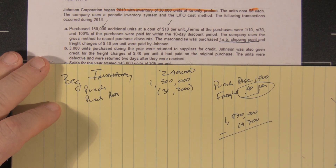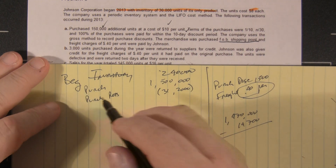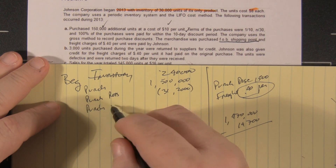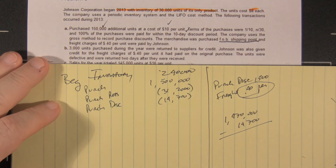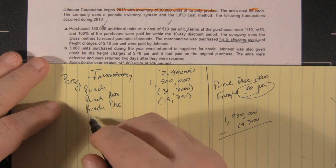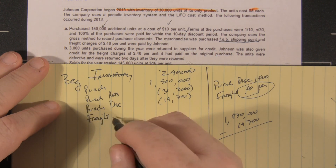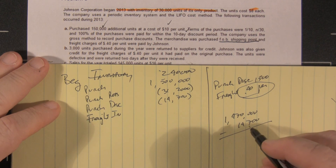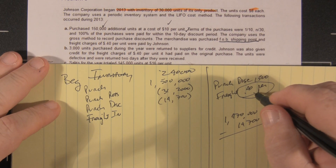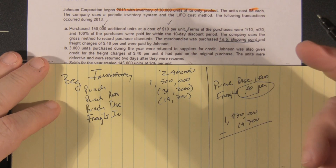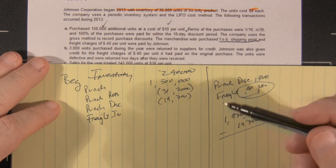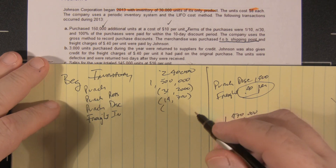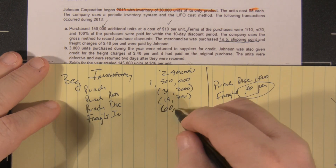Remember, this is periodic inventory, so we do all of these figures at the end. Our purchase discount is $14,700. Plus freight-in: we brought in 150,000 units at $0.40 per unit. We're putting all of these numbers together at the end of the period. So our freight-in was 150,000 times $0.40, which is $60,000.